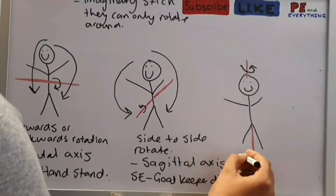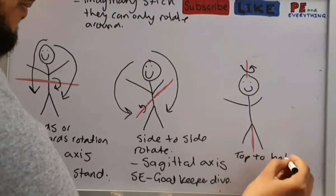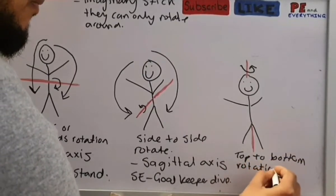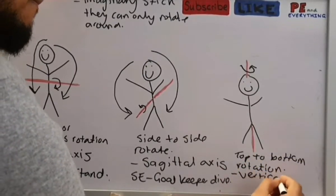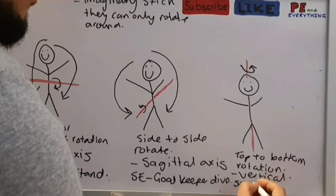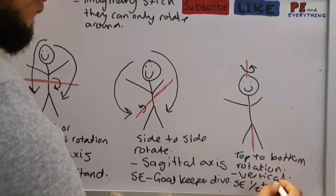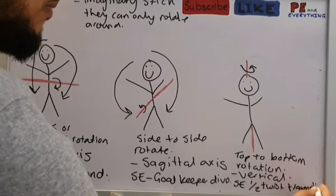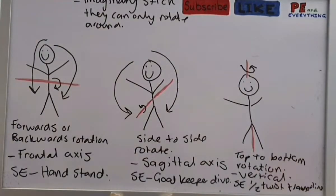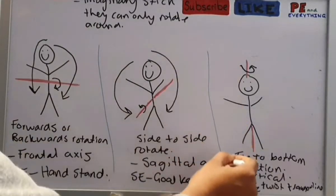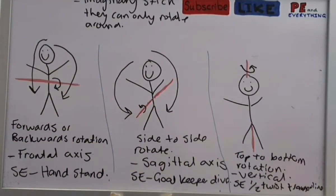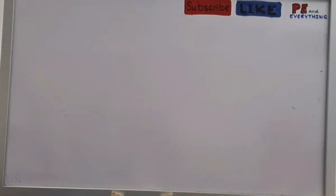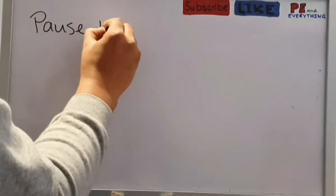For the next one, if I put my invisible skewer up the person's bottom and out of their head, then twist it, it means that they're moving on the vertical axis. A sporting example would be like a half twist in trampolining. So we've got our three axes now: frontal, sagittal, vertical.